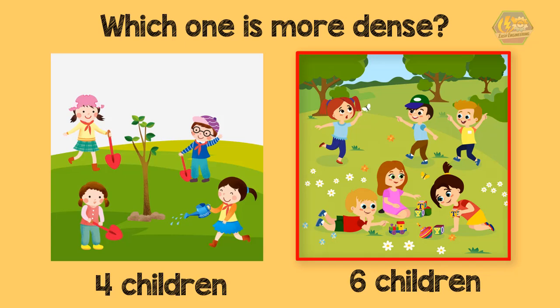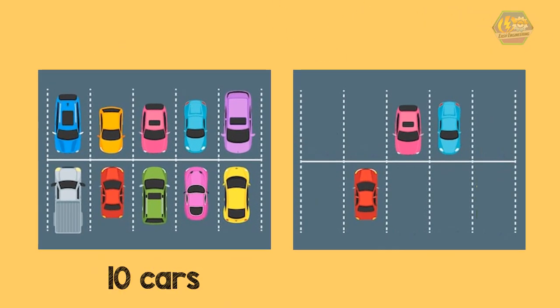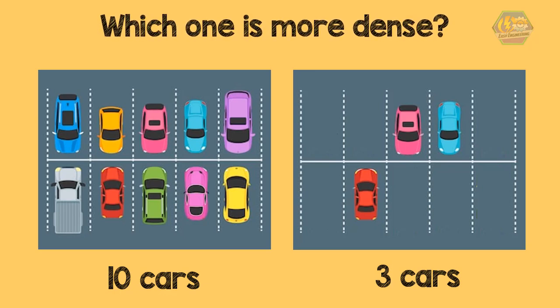Now take a look at another example. The parking lot on the left side has 10 cars, while the parking lot on the right side has 3 cars. So which is more dense? That's right, the parking lot on the left side is more dense than the parking lot on the right side.